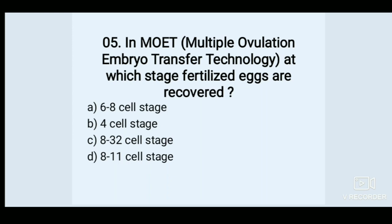In MOET (Multiple Ovulation Embryo Transfer Technology), at which stage are fertilized eggs recovered? Options: A. 6-8 cell stage, B. 4 cell stage, C. 8-32 cell stage, D. 11 cell stage. Answer: C. 8-32 cell stage.